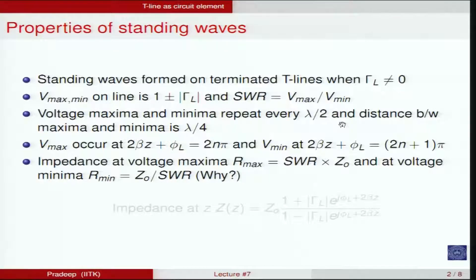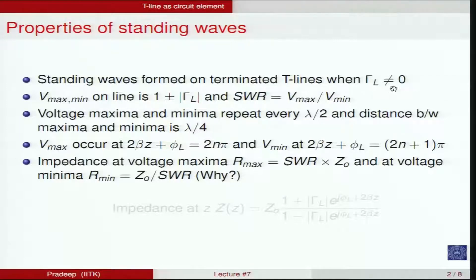In this module, we will discuss the steady state sinusoidal response of transmission lines. We introduced standing waves in the last module and will continue with a brief summary of standing wave properties. Standing waves are formed whenever a transmission line is terminated with gamma_L not equal to 0. With gamma_L equal to 0, there is only an incident wave.